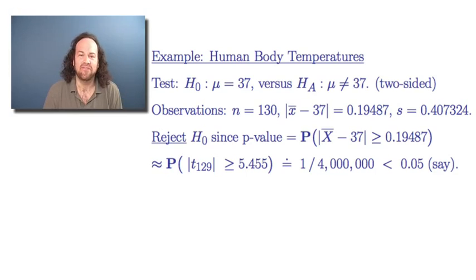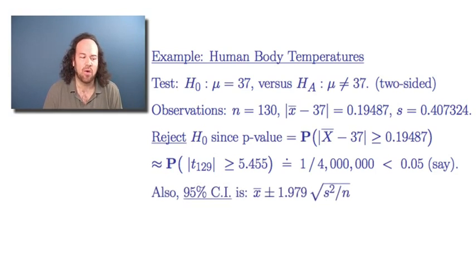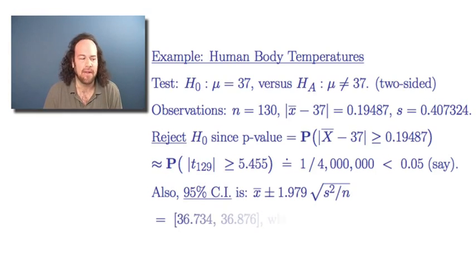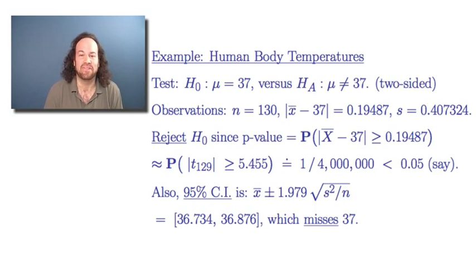We also could compute a confidence interval — a confidence interval for a mean. It's our observed mean plus or minus a certain value. For the normal it was 1.96, but in this case because it's a t-distribution it's a little bit larger: 1.979. And again, times the square root of the observed standard deviation squared divided by n. That works out to a certain interval which again misses the value 37 degrees. So again, we can say that we could either consider 37 degrees to be a null hypothesis and reject it, or look at the confidence interval and see that it misses 37 degrees.